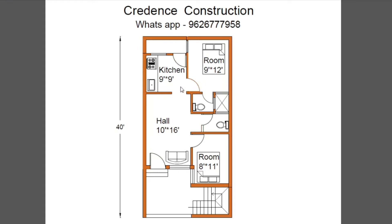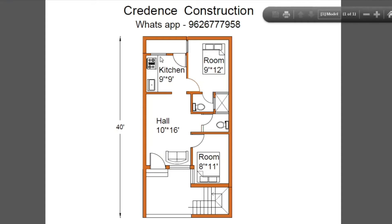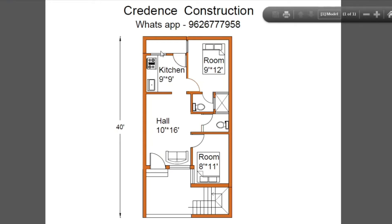Next we have the kitchen. The kitchen size is 9 feet by 9 feet. This is the gas stove. We have to place the sink and a window in the kitchen. The window size is 4 feet by 2 feet 6 inches. This is the back door and we will place the OTS here.